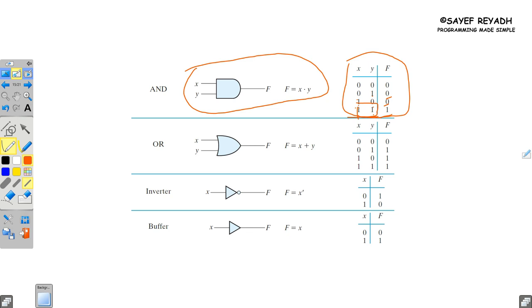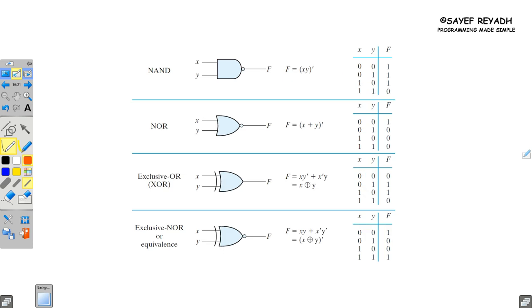For OR gate, comparing the truth tables: x OR y - when both are 0, output is 0; when x is 0 and y is 1, output is 1; when x is 1 and y is 0, output is 1; when both are 1, output is 1. Now inverter gate - the truth table shows the opposite: input 0 gives output 1, input 1 gives output 0. Buffer is just a straight line, it directly outputs what you input: 0 gives 0, 1 gives 1, with some delay.